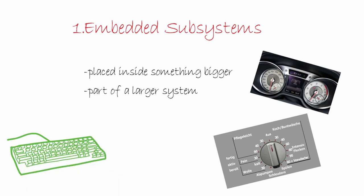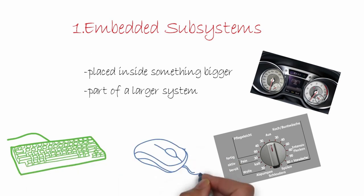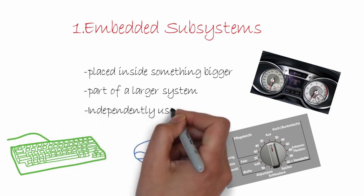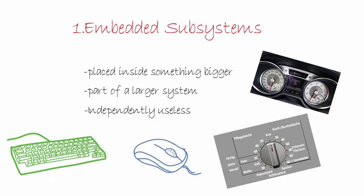Even parts of a computer, like a keyboard and a mouse, are basically embedded systems. Independently, these embedded systems are useless, but they aid a larger system in performing its task.